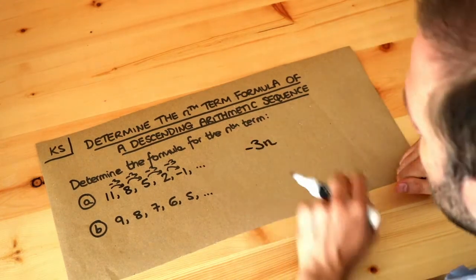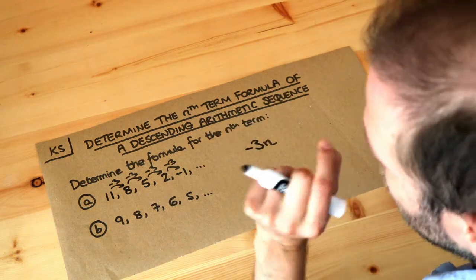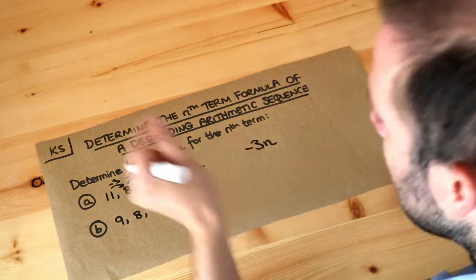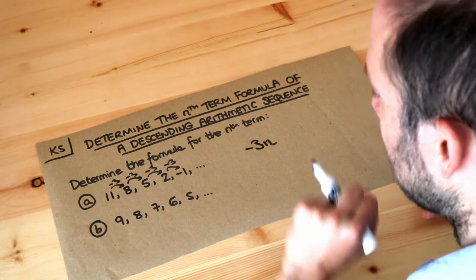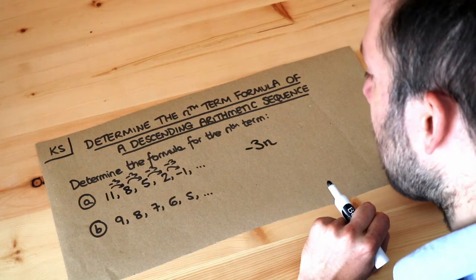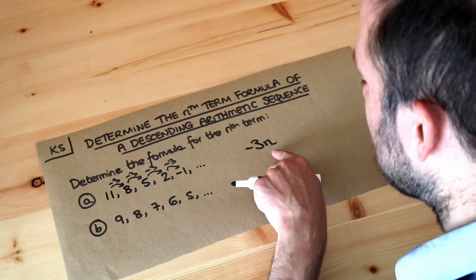And what I mean by an nth term formula is that if you know the position of the sequence, so let's say we want the 10th term, we can shove that 10 into a formula and that will tell us what the 10th term of the sequence is. Now once you've got the first bit of the formula what I always do is say what would the first term of the formula be?